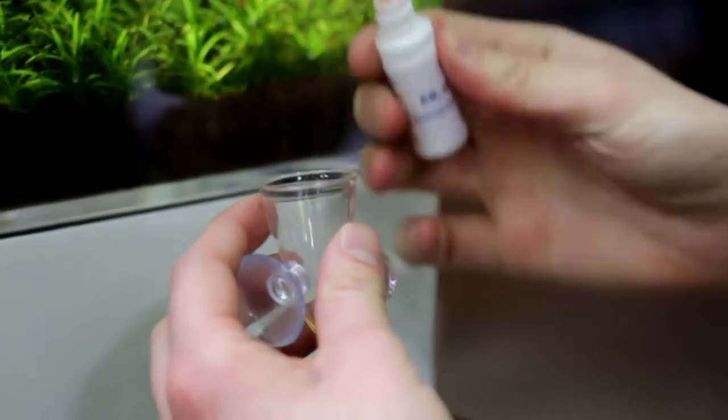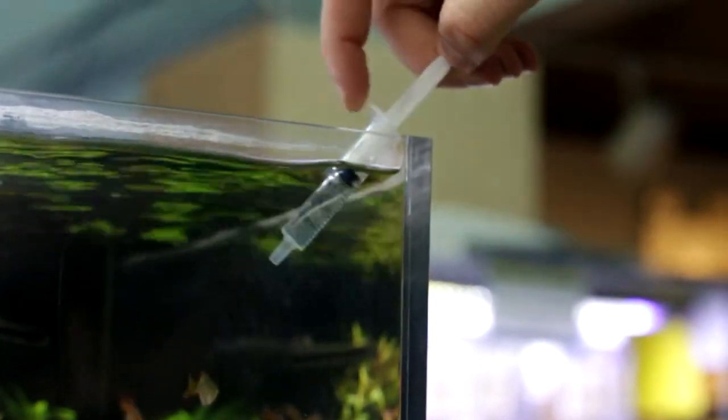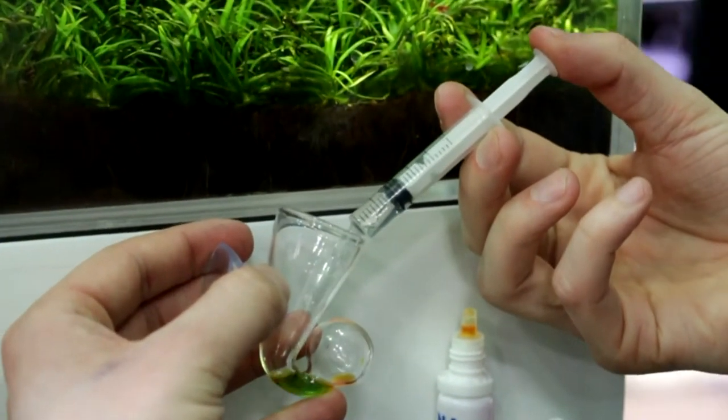Carefully pour that into the bulbous part of your CO2 drop checker. Then take 1.5 milliliters of tank water and add that into the drop checker as well, getting it into the bulb.